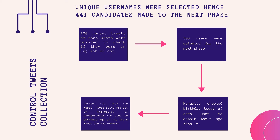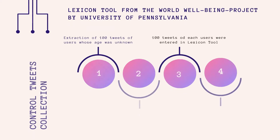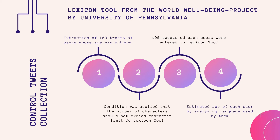To find the age of the remaining users, we followed the same technique as Glenn Coppersmith et al. by using lexicon tools from the World Wellbeing Project by the University of Pennsylvania. We extracted 100 tweets of each user whose age was unknown, making sure the extracted tweets did not exceed the limit the lexicon software can handle. We entered the user tweets into the lexicon tool, and it estimated the age of each user through analysis of the language they used.